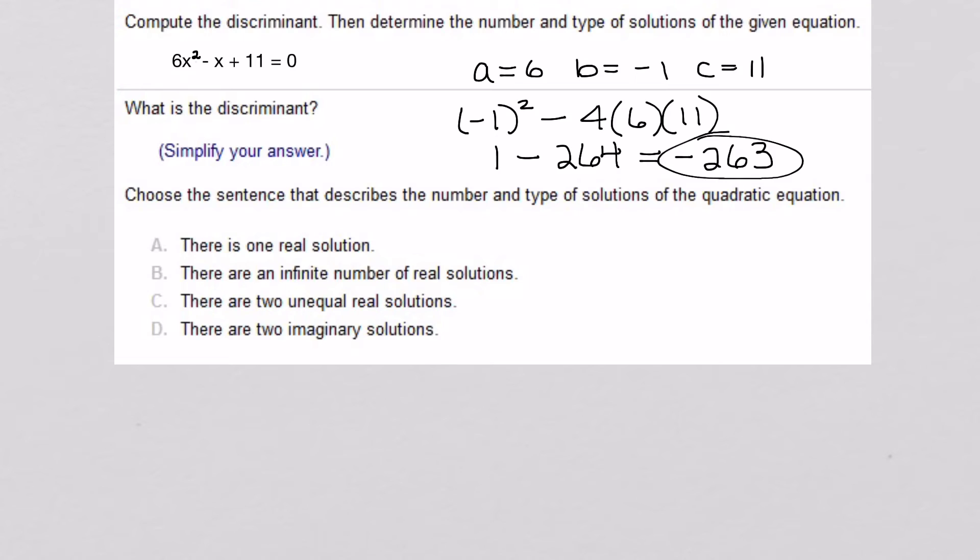And then, what type of solutions do I have? Oh, dear. Okay, so they cheated again, and they said two imaginary solutions. So, there we go. So, we're going with two imaginary solutions instead of saying no real solution. So, there's a good thing I give you that spoiler.